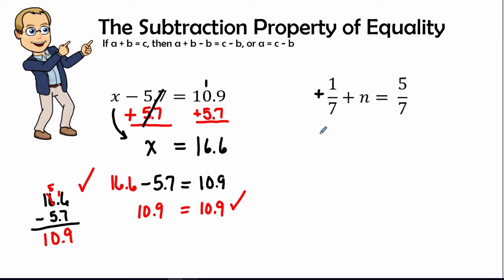The inverse of positive 1/7 is negative 1/7, and we are going to subtract 1/7, or add negative 1/7, to both sides.